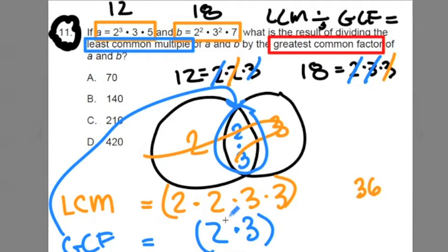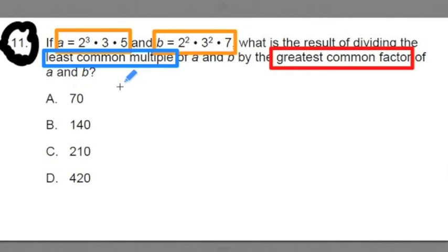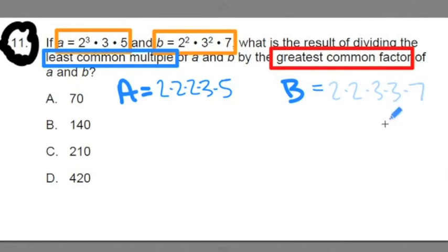Now let's try this with the original numbers. Now A and B are already written out in prime factorization form. I'm just going to expand it out. So I'm going to write down all the values, all the digits there. So this is 2 times 2 times 2 times 3 times 5. And I'm going to do the same thing for B. B is made up of 2 times 2 times 3 times 3 times 7.